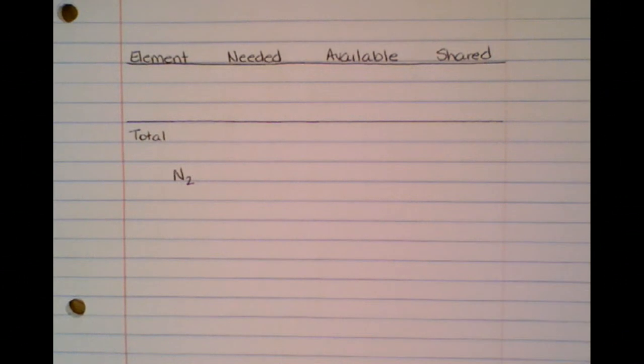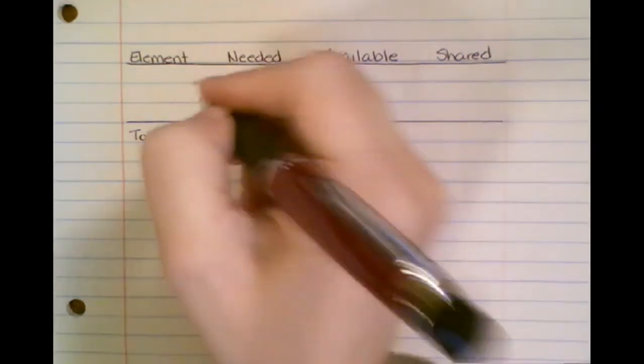We want to look at another example of Lewis structures and how to draw one. So what if you have N2, which is just nitrogen? How would you draw the Lewis structure for that? So I'm going to fill out...